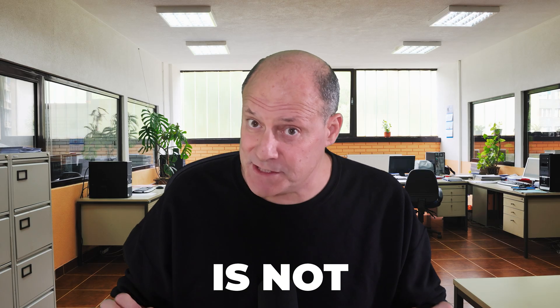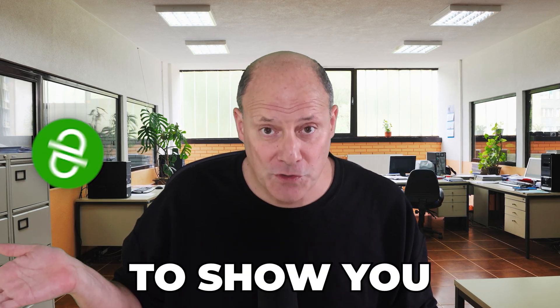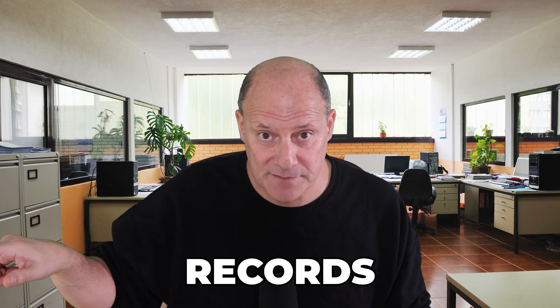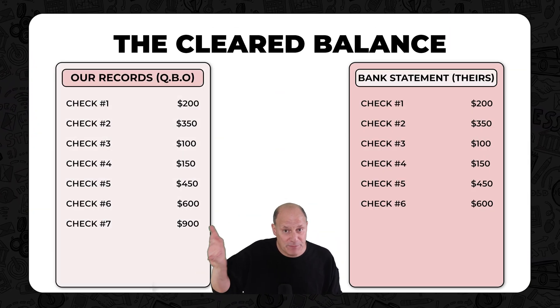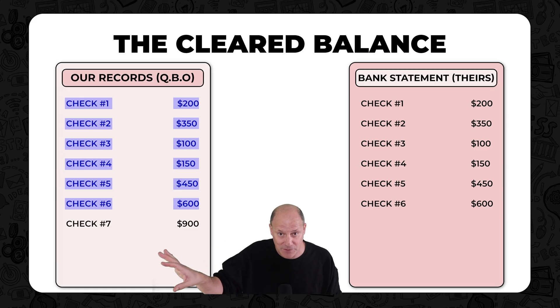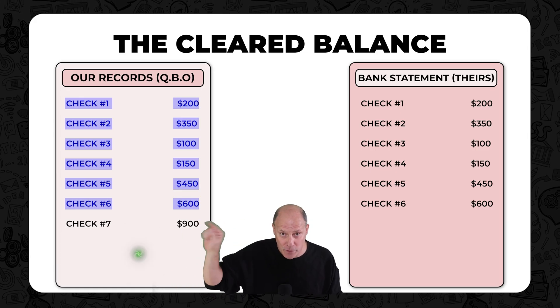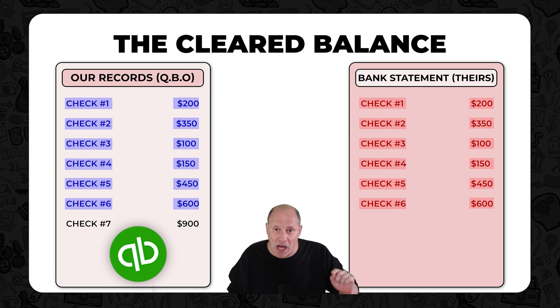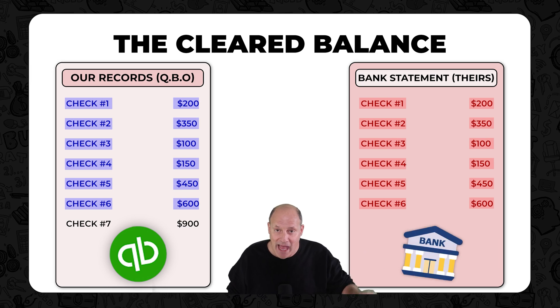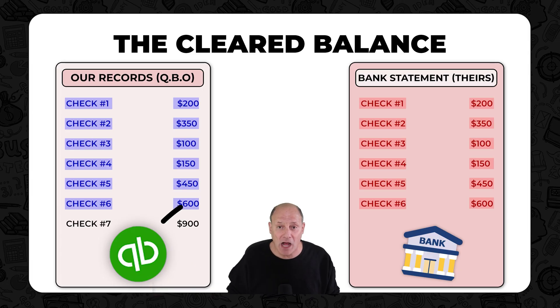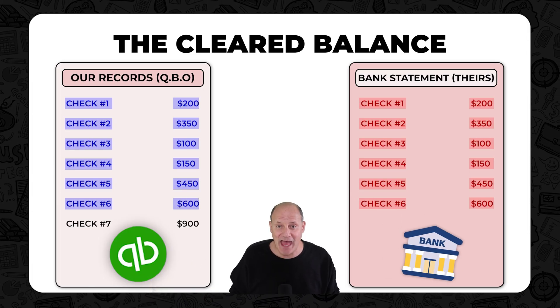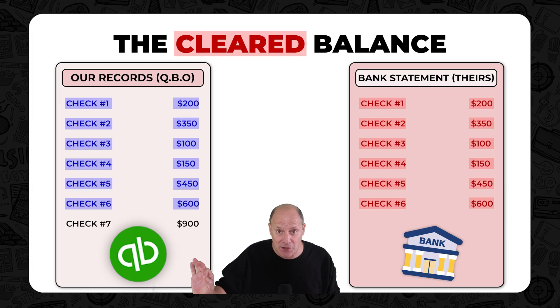The Cleared Balance is not the balance you see when you ask QuickBooks Online to show you the balance of your bank account according to the QuickBooks records. The Cleared Balance is only the balance of the specific transactions within that account that you told QuickBooks Online were found on the bank statement. And if an item in your QuickBooks Online is found on the bank statement, we say that that item has cleared the bank.